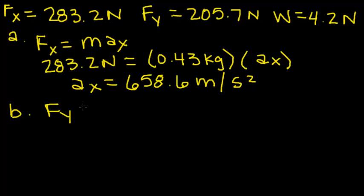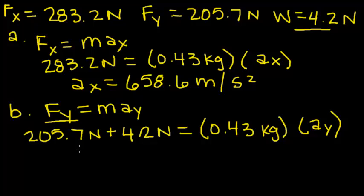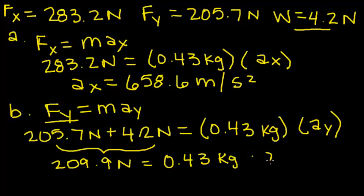Now for part B, we use F equals MA in the y component only, so Fy equals MA of y. We know that Fy is all of the forces in the y direction, so we have both 205.7 newtons plus the weight, which is 4.2 newtons. That equals 0.43 kilograms times the acceleration in the y direction. These two added together come to be 209.9 newtons equals 0.43 kilograms times acceleration of the y direction. Solving for ay, we now get 488.1 meters per second squared.